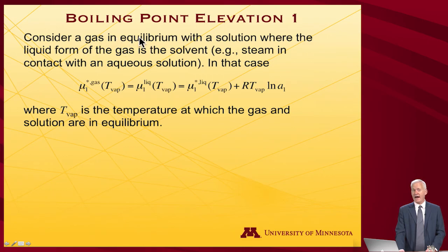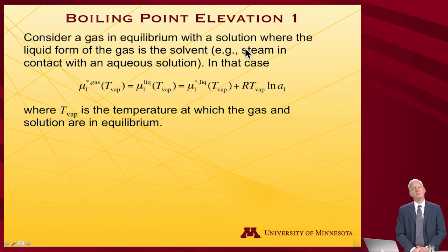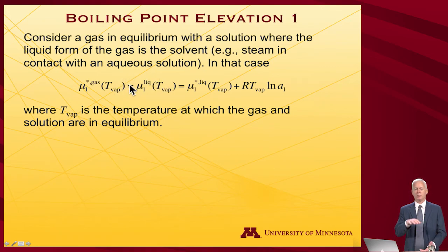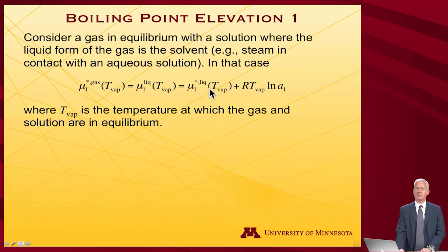Let's consider a gas in equilibrium with a solution — that's the liquid that has something dissolved in it, where the liquid form of the gas is the solvent. Picking our favorite solvent, let's make it water, so that would be steam in contact with an aqueous solution. In that case, the chemical potential of the gas — the steam, which is pure — is equal to the chemical potential in the liquid at the vaporization temperature. And the liquid, which is a solution, equals the chemical potential of the pure liquid plus RT log the activity.